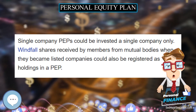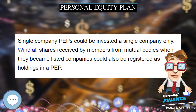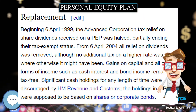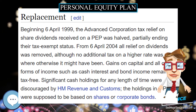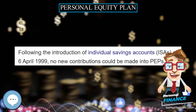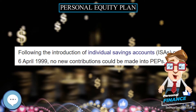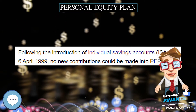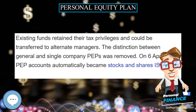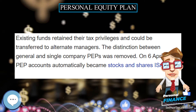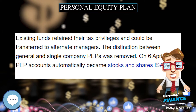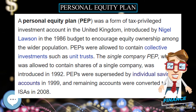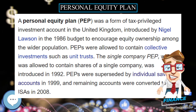PEPs were allowed to contain collective investments such as unit trusts. The single company PEP, which was allowed to contain shares of a single company, was introduced in 1992. PEPs were superseded by individual savings accounts in 1999, and remaining accounts were converted to ISAs in 2008.